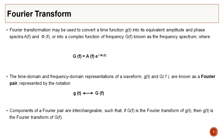Fourier transform is a way to represent your time signal in the frequency domain. A function g(t) can be represented in the frequency domain as G(f) = A(f) * exp(i*phi(f)), where A(f) is the amplitude spectrum and phi is the phase spectrum. G(t) and G(f) are known as a Fourier pair — they are interchangeable; you can transform from time domain to frequency domain and back.